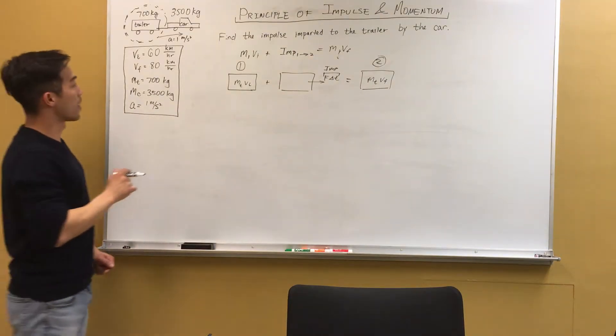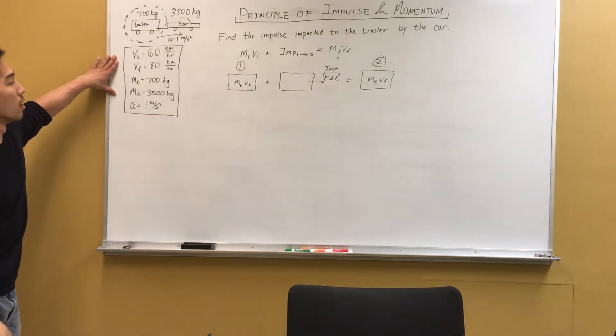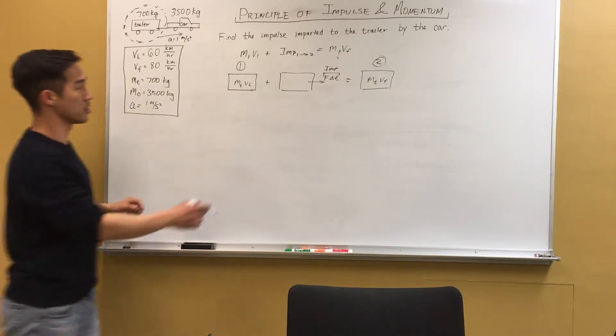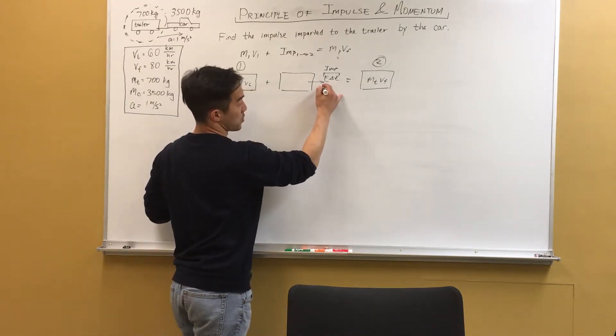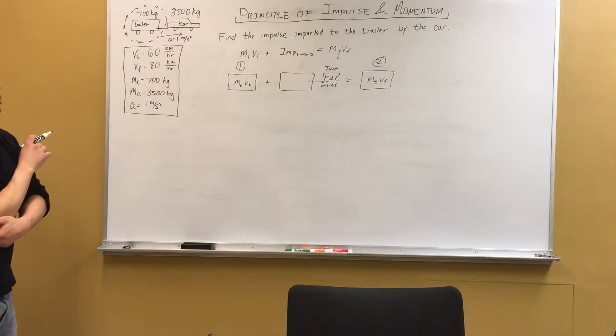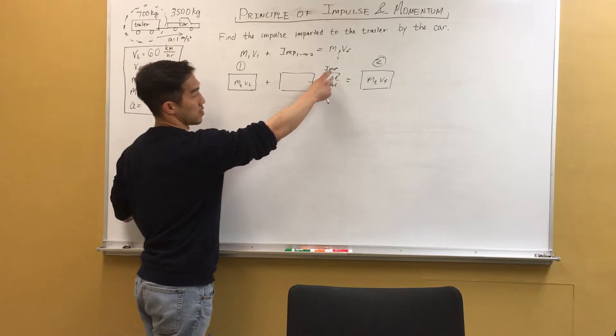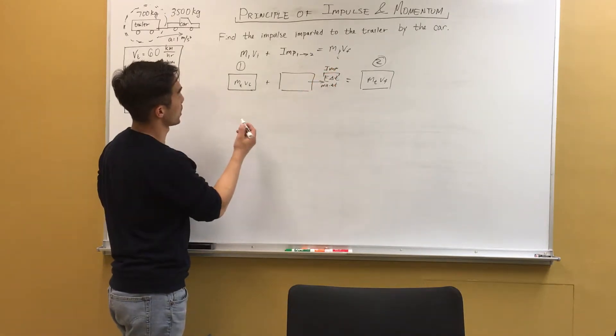So in order to find impulse, we just have to plug in all of our given variables. And this problem tries to trick you because it gives you this additional piece of information. We actually don't have to decompose this force, which we can decompose it into mass times acceleration, and of course that's multiplied by some change in time. But because the problem asks for the impulse, we don't have to decompose this impulse term any more than it needs to.